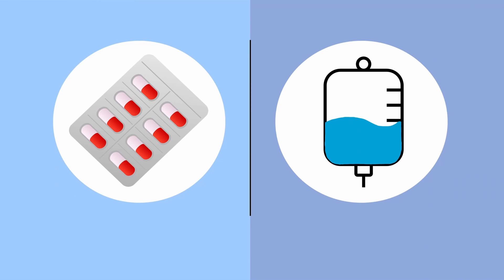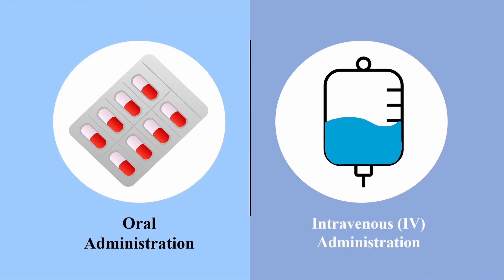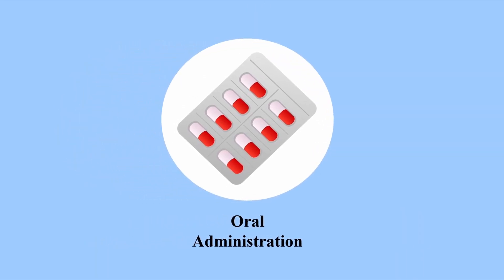Antiarrhythmics can be administered either orally or intravenously. The method of administration depends on the patient's condition — in more severe conditions, they are administered intravenously for quicker action. Some medications such as quinidine are available in both oral and intravenous forms, while others can only be found in one form. It is important to note that continuous cardiac monitoring is required when antiarrhythmic drugs are administered intravenously. Oral administration via pills, tablets, and capsules is most often encountered in chronic care.